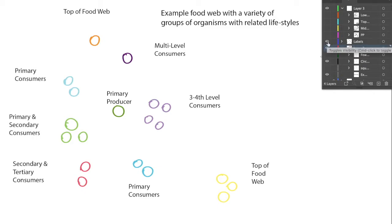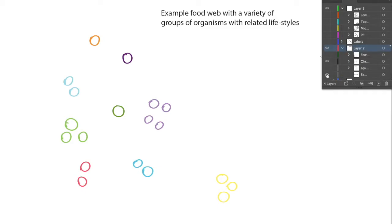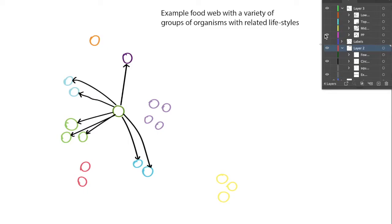I'm going to hide the labels so that it's a little easier to see, and then we're going to go through and look at some of those interconnections in terms of the food web. We have our primary producer here and it's eaten by these different types of organisms.